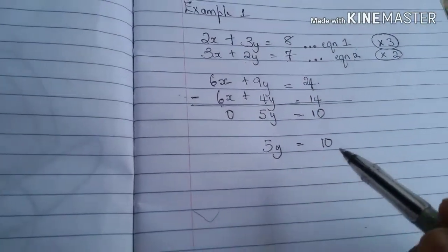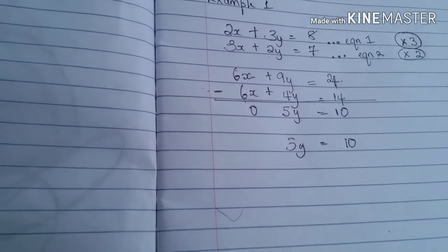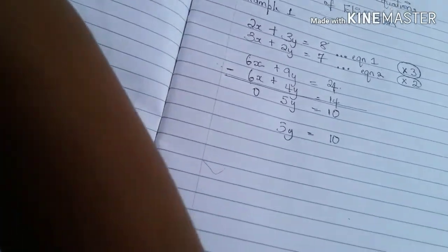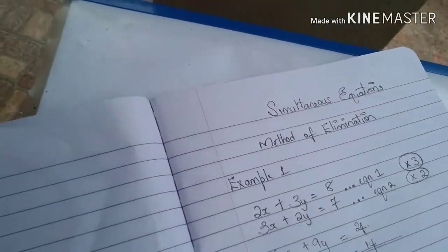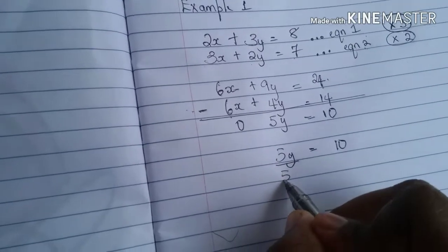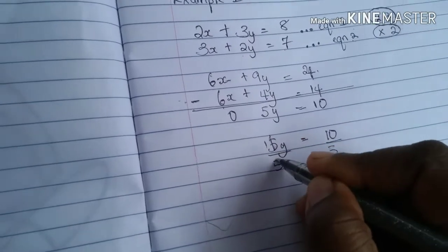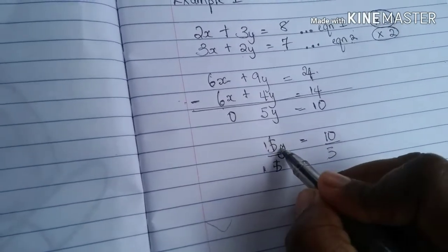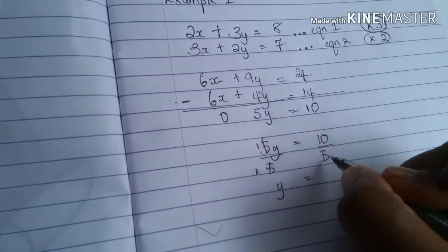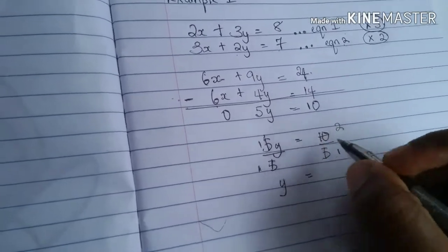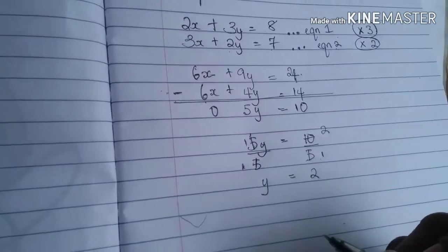Alright, we know that 5y is equal to 10. We want to know what 1y is. So what we are going to do is find that number that when you divide it by 5, we get 1. And we know that the only number that can go into 5 one time is 5. So we divide both sides of our equation by 5. 5 into 5, 1. 1 times y gives us y or 1y. And then 5 into 10, 2. 2 over 1 is the same as 2. So y is equal to 2.